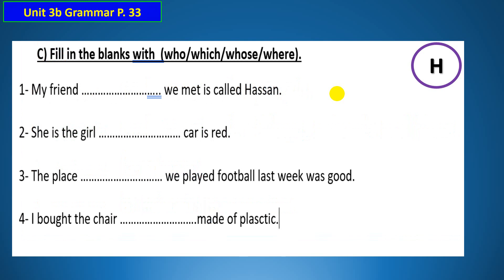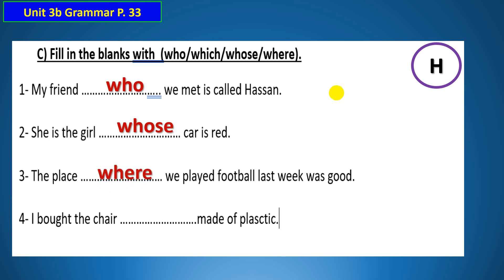Now answer this question. My friend — I am talking about a person, so I use 'who'. Whose car — I use 'whose' to add more information about possession. The place we play — I am talking about a place, so I use 'where'.